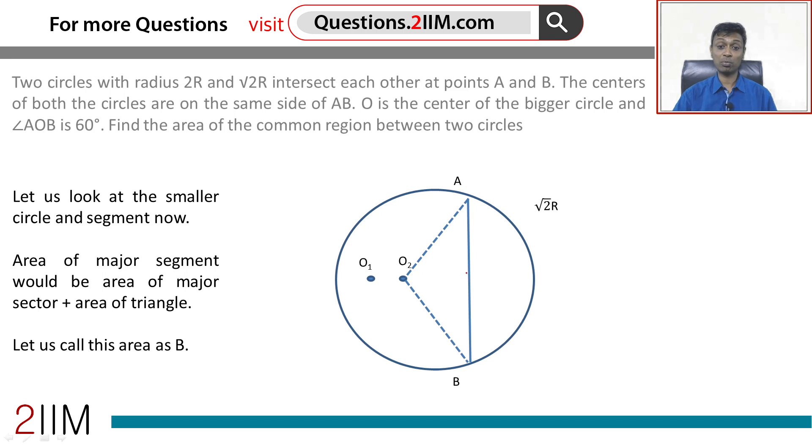Next up, we are going to think about the smaller circle. This angle is 90. So, remaining is 270 or 3 quadrants. 3 by 4 into pi into root 2R whole square, plus area of this, this is root 2R, root 2R, area of the triangle is half into root 2R into root 2R.